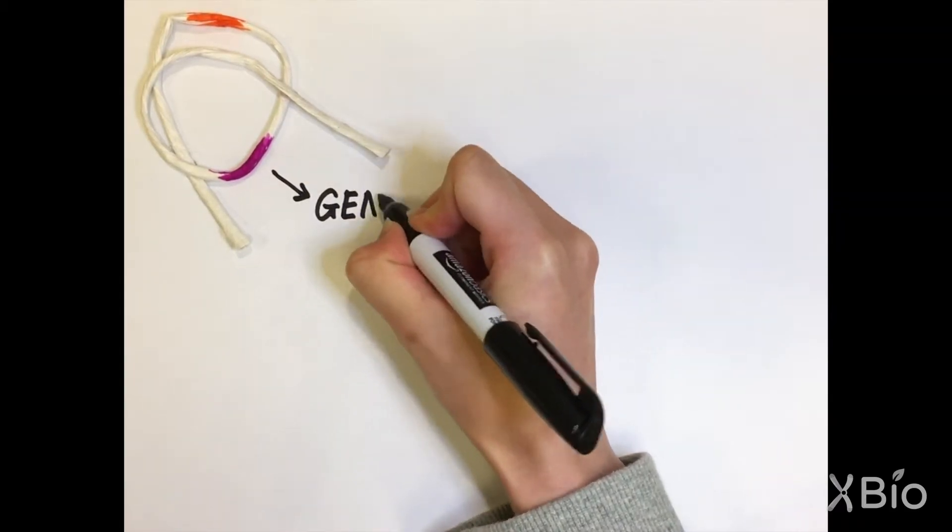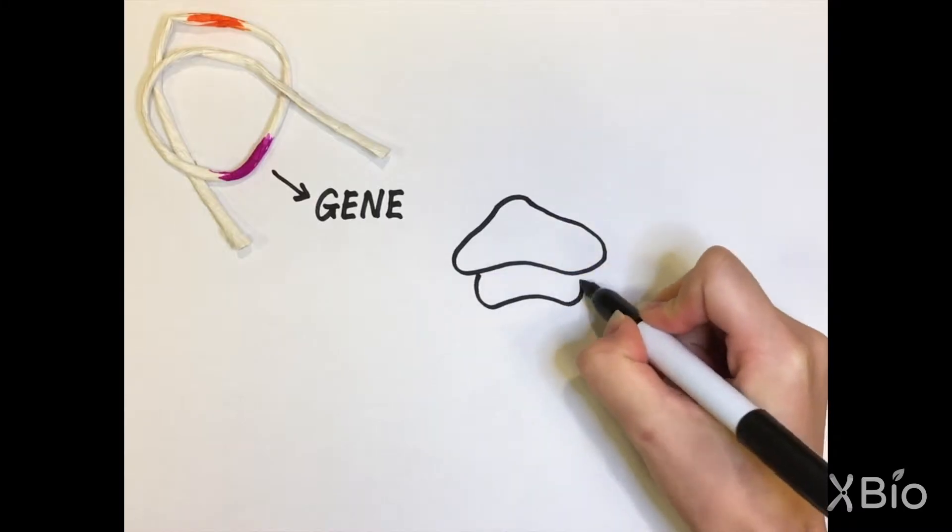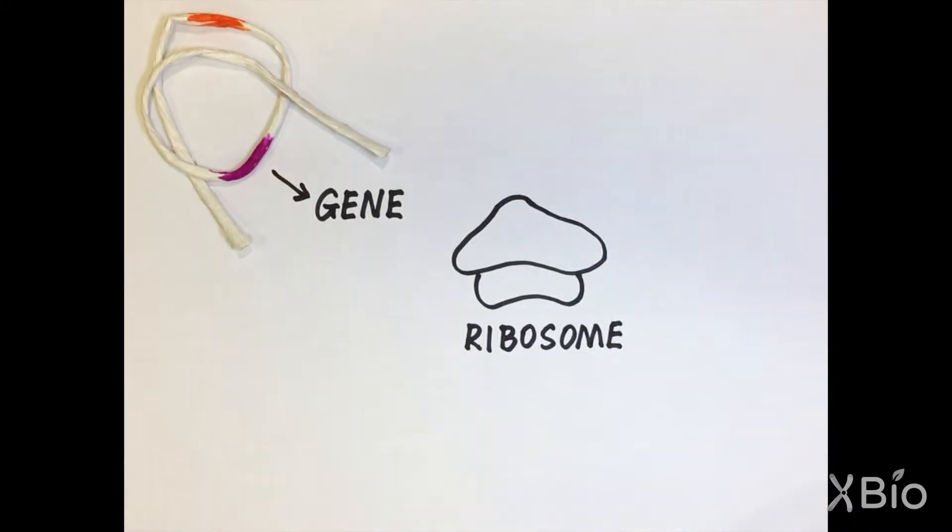A section of DNA that contains the instructions to make one protein is called a gene. A complex machine called the ribosome needs to read the instructions and use them to build the protein.